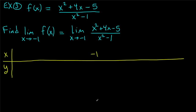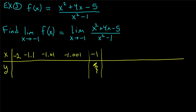Numbers less than −1: −1.1, −1.01, −1.001. Numbers bigger than −1: −0.9, −0.99, −0.999. We want to come from both sides of −1. Let's plug them in.